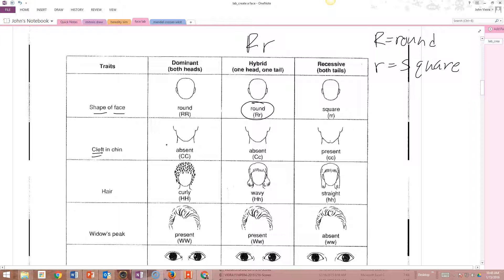Same thing with the cleft of the chin. The cleft of the chin is this little kind of butt chin, that little kind of indentation in the chin. The capital or dominant is not to have it. So the little c is if it's present, if you have that little indentation.